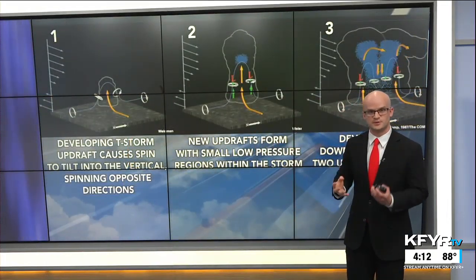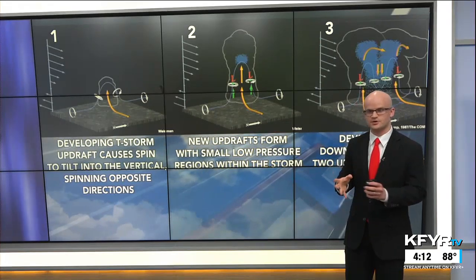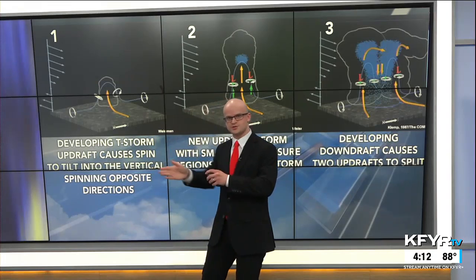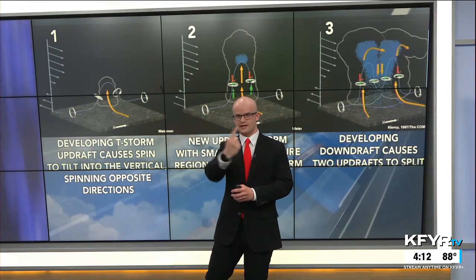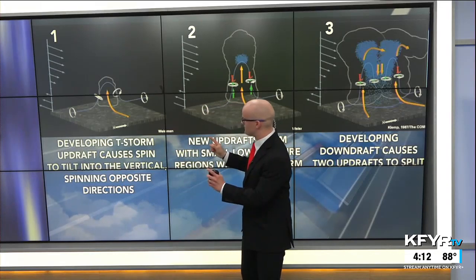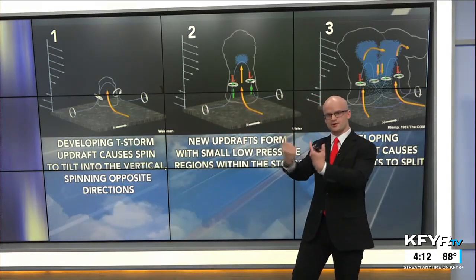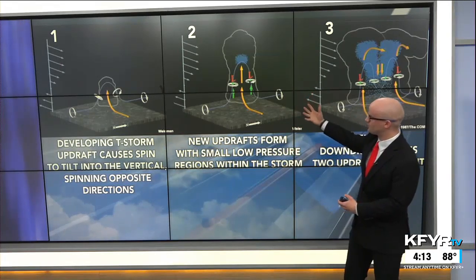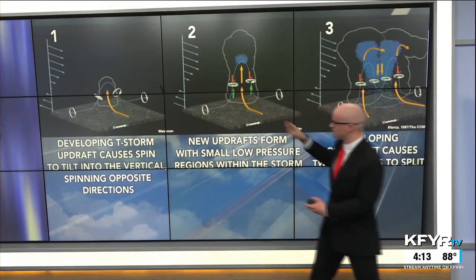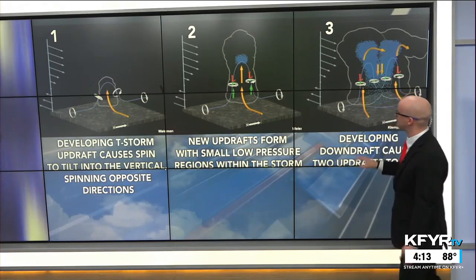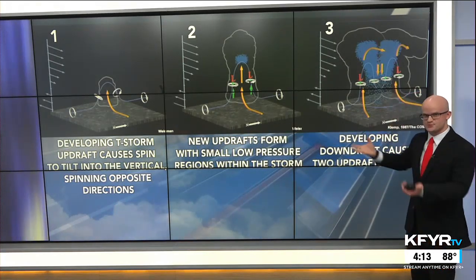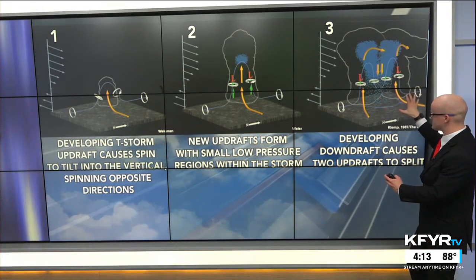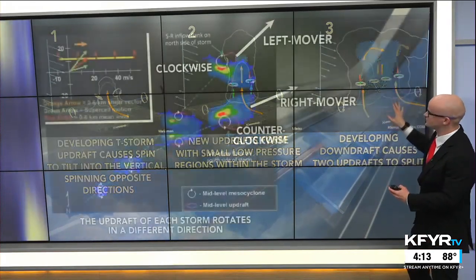Storm splitting is a somewhat rare occurrence. The developing thunderstorm updraft causes that spin to go from horizontal to vertical, producing two separate areas of rotation spinning in opposite directions — one counterclockwise and the other clockwise. New updrafts form within the thunderstorm cloud, with small regions of low pressure helping to suck air upward. There's also a developing downdraft, and that rain-cooled air in the center of the storm separates the two updrafts and causes the storm to start to split.